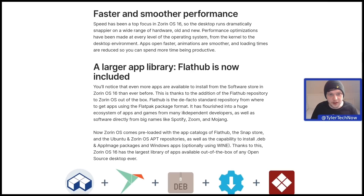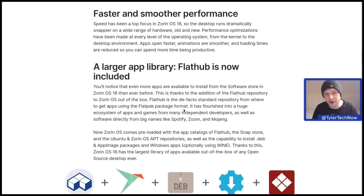Faster and smoother performance — speed has been a top focus of Zorin OS 16. The desktop runs dramatically snappier on a wide range of hardware, old and new, with performance optimisations made at every level of the operating system, from the kernel to the desktop environment. Apps open faster, animations are smoother, and loading times are reduced so you can spend more time being productive.